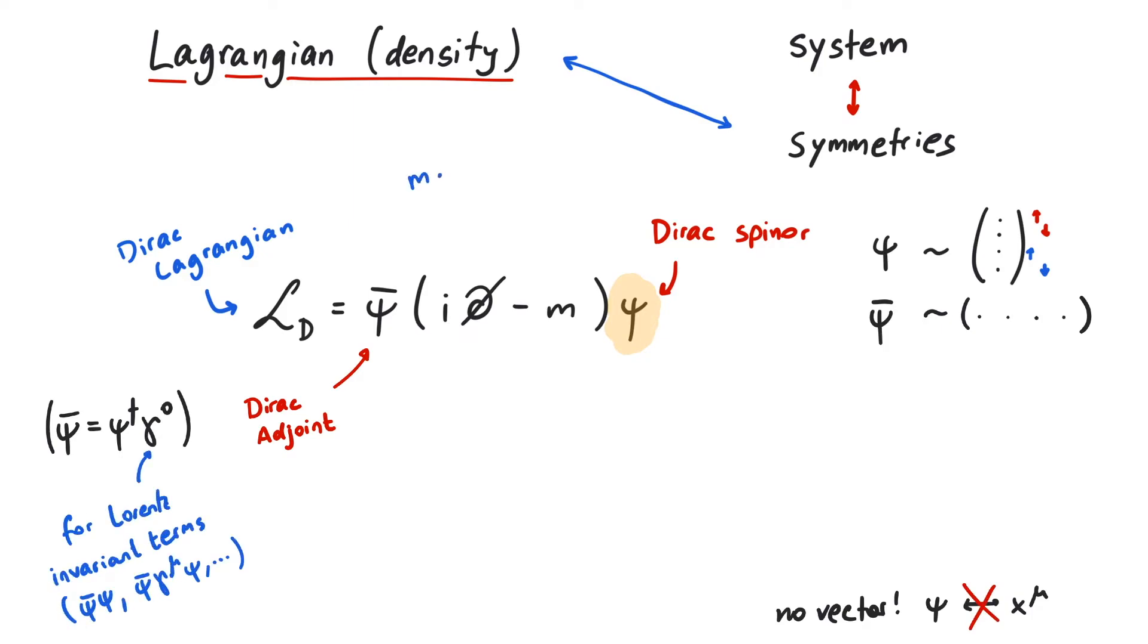The lowercase m is the mass of the particle we want to describe. So if the spinor psi stands for an electron, then m is the mass of an electron.